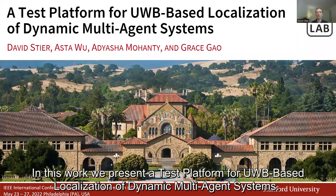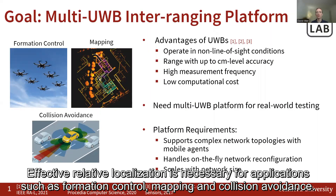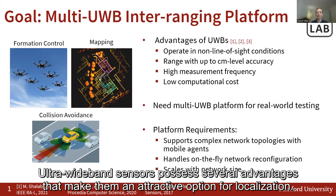In this work, we present a test platform for UWB-based localization of dynamic multi-agent systems. Effective relative localization is necessary for applications such as formation control, mapping, and collision avoidance.